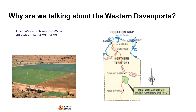Why are we talking about the Western Davenport? In the Northern Territory we have water plans, and the Western Davenport's existing water allocation plan has lapsed — this is a new 10-year document. This region is about 300 kilometres north of Alice Springs and 100 kilometres south of Tennant Creek. It includes the remote community of Alikurung, parts of the Davenport Ranges National Park, and is home to the Singleton Station water licence — one of the largest water licences in Australia — which has attracted significant scrutiny.